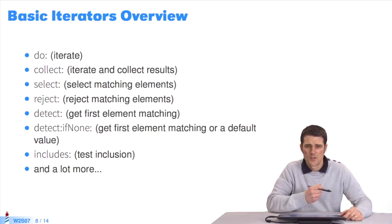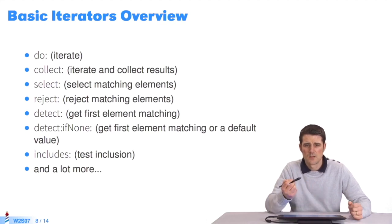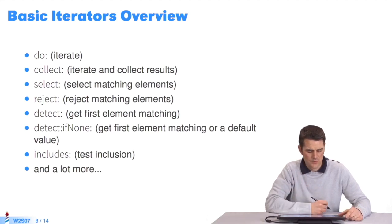Select selects matching elements in a collection. You build a new collection with those you selected. Reject rejects the elements of a collection you don't want. Detect helps to determine whether an element exists in a given collection. We'll study some of these in the next slides.